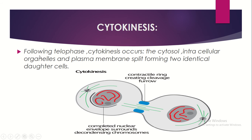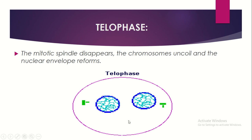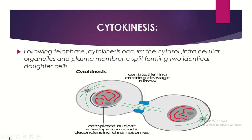Cytokinesis follows telophase. In cytokinesis, the cytosol, intracellular organelles, and plasma membrane split, forming two identical daughter cells. A contractile ring creates a cleavage, and the two new cells are formed.